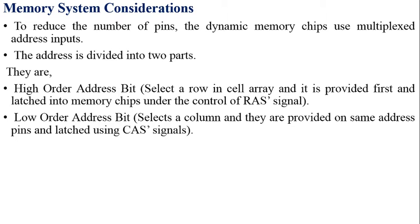The two parts are the higher-order address bits and lower-order address bits. The higher-order address bits select a row in the cell array. This row address is provided first and latched into the memory chip under the control of a RAS-bar signal. The higher-order m bits are passed to the decoding unit and enable the decoding activity with the help of the RAS-bar signal.